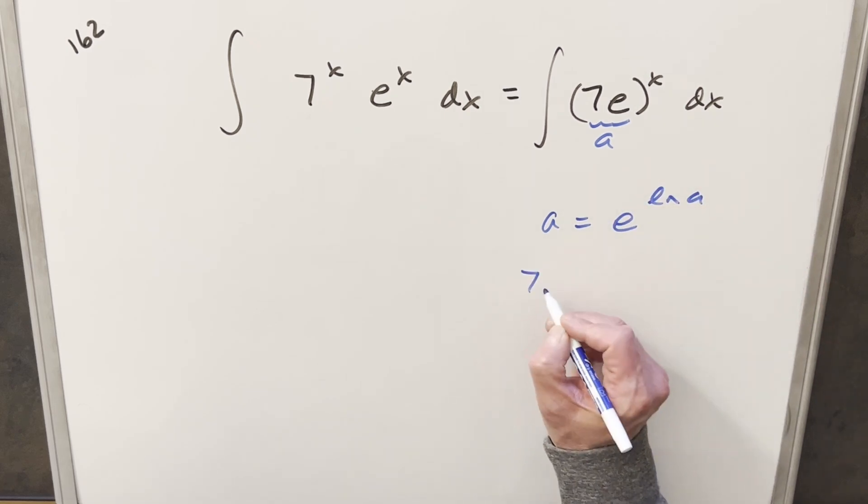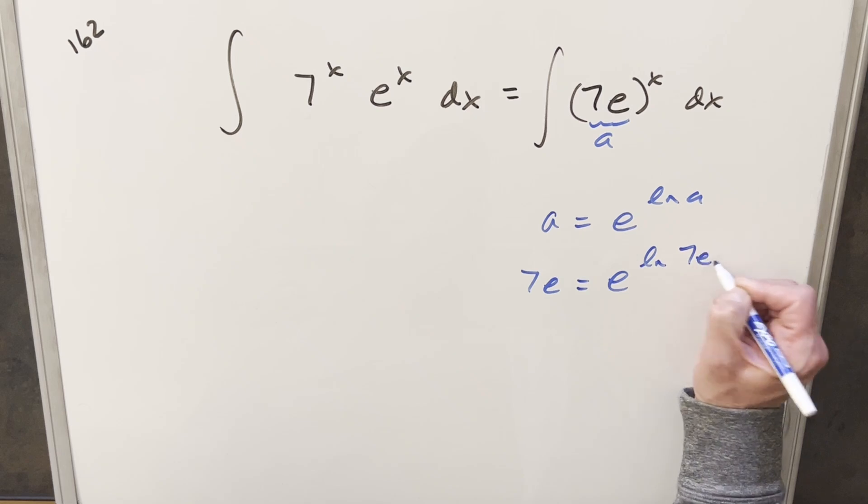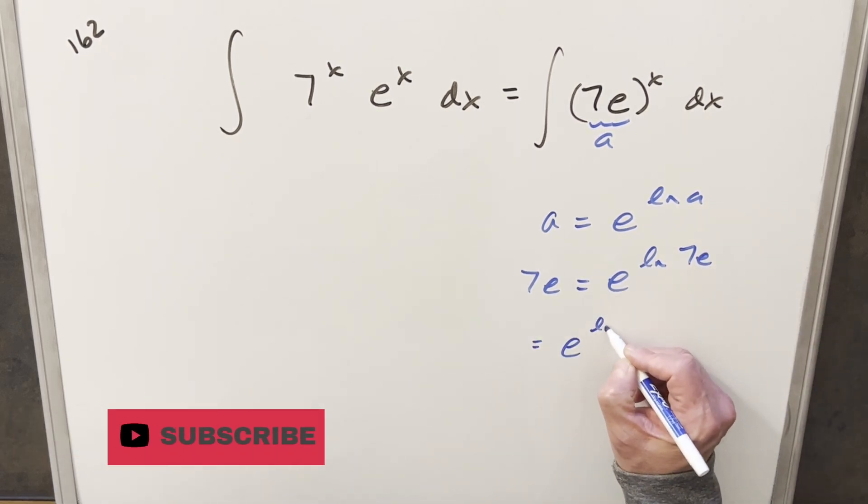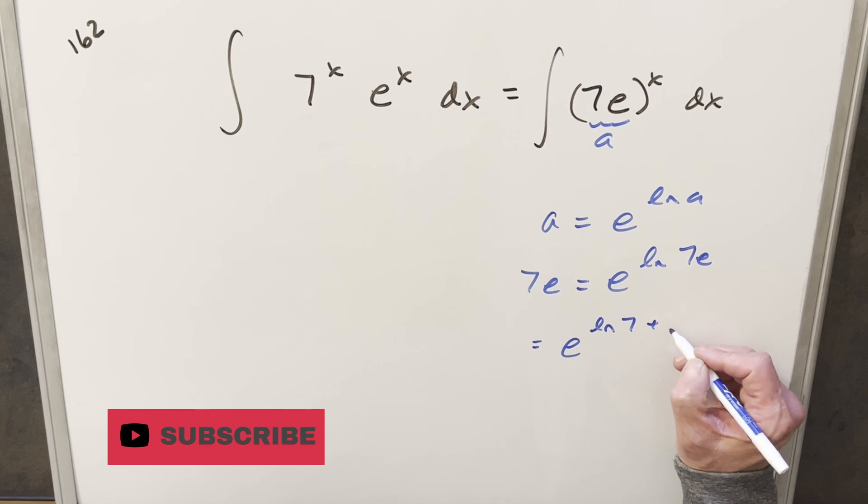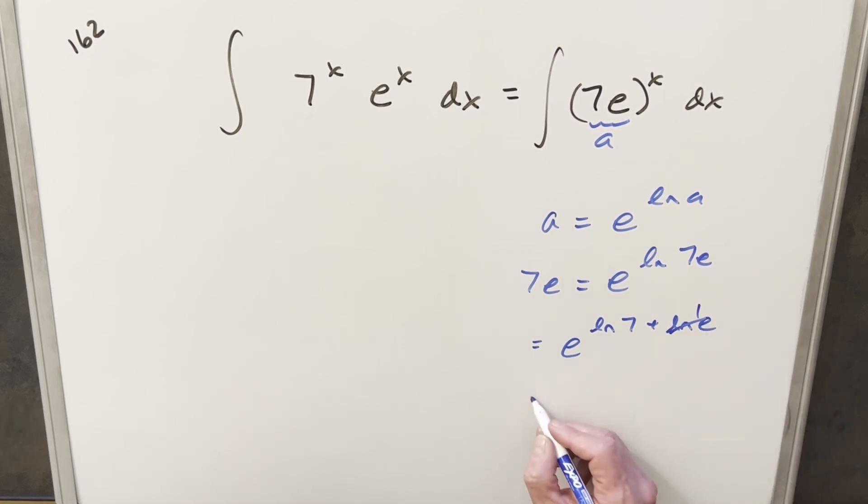So for what we have here, for 7e, I can write this as e to the ln of 7e. I can use log properties and write it as e to the ln 7 plus ln e. But ln e is just 1, so what we have here is just e to the ln 7 plus 1.